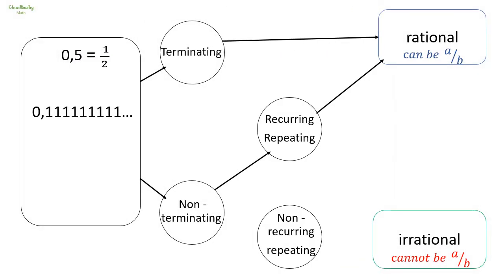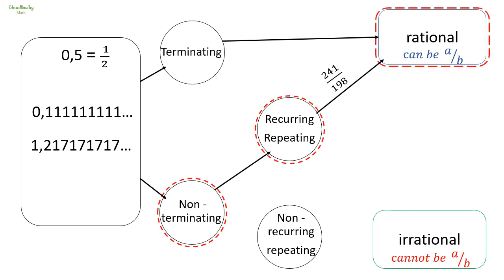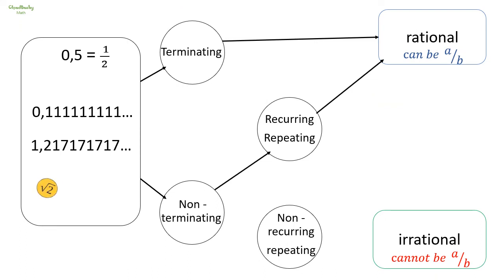Sometimes more than one number can be repeating after the decimal comma. A number like 1.21717... goes on and on without coming to an end, but we have two digits — 17 — repeating consistently after the decimal comma. That is good enough as an indicator that this number can be written as a fraction, making it a rational number.